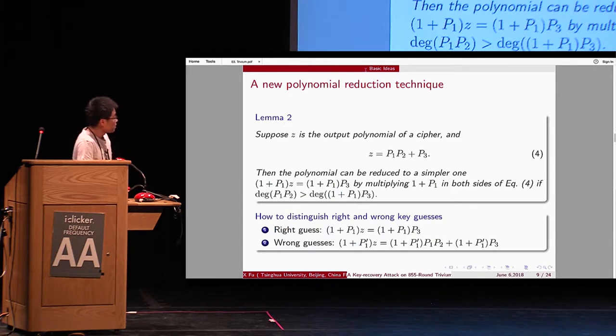Some basic ideas. Suppose z is the output polynomial of cipher. And it can be written as this formula. And suppose p2 is more complexity than p3. Then we can multiply 1 plus p1 in both sides of the equation to simplify the output bit. So, when simplifying this polynomial, we have to guess the k bits in p1. So, under the right key guess, the polynomial is reduced. Otherwise, it is not reduced.